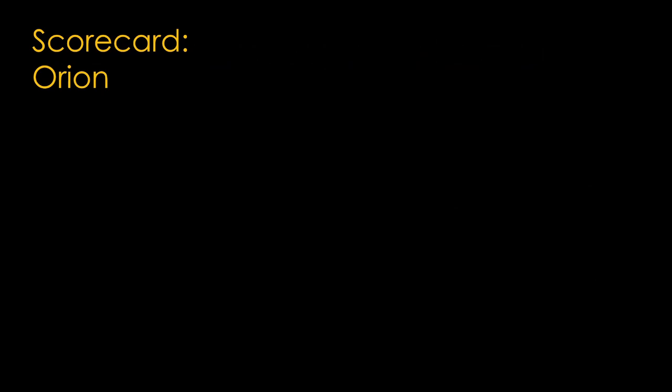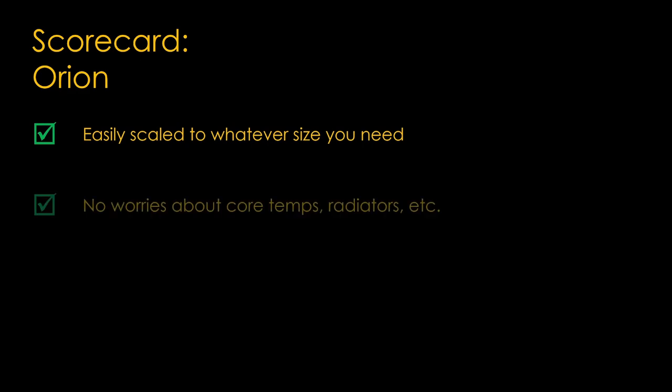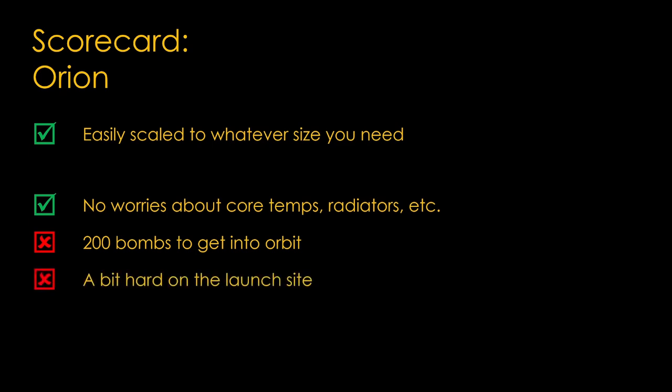Here's a scorecard for Orion. On the positive side, it's easily scaled to whatever size you want, and mass is not a problem, and the vehicles are quite practical to build. No worries about core temps, radiators, complex fuel designs, etc. On the downside, 200 bombs to get into orbit is a lot of bombs, and taking off is a bit damaging to the launch site. Orion turns the craziness score up to 11.